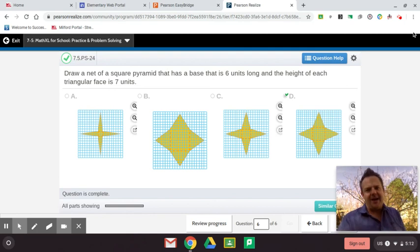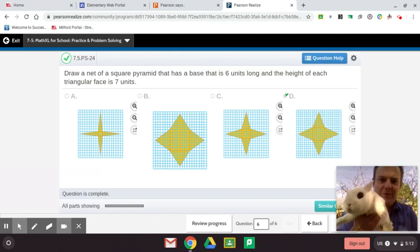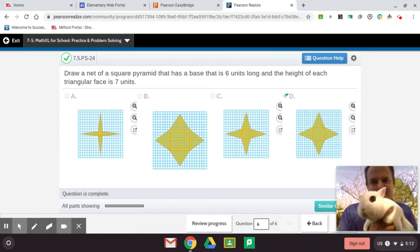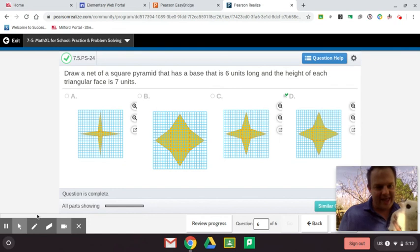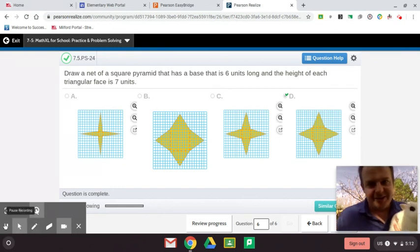Thanks guys. I hope this helped you. This is Bubbles and Jason Jacobs signing out of seven dash five practice and problem solving on Pearson Realize enVision for sixth grade. Thanks guys. I'll see you later. Bye.